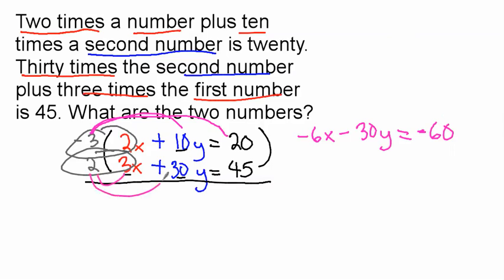And then this one you also distribute amongst all three. So 2 times 3x is positive 6x, plus 60y, equals 2 times 45, which is positive 90.